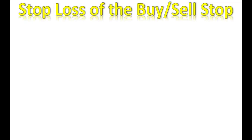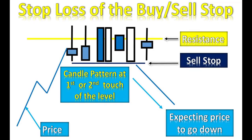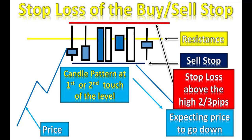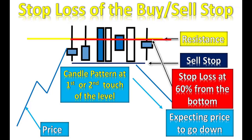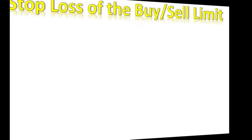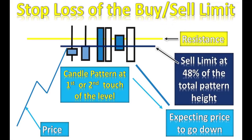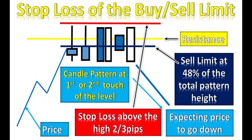Now let's see the stop loss for the buy and sell stop. You place a sell stop just below the pattern if it hits a resistance, and your stop loss will be above the high by 2 or 3 pips — this is the most conservative way and has less chance of being hit. The second way is to place your stop loss at 60% from the bottom. This stop loss is more aggressive and has more chance of being hit, but it gives you a better risk-reward ratio. For the buy and sell limit, your entry is at 48-50% of the pattern, and your stop loss is above the candlestick formation by 2 to 3 pips — the only stop loss position for this entry type, giving you a very nice risk-reward ratio.